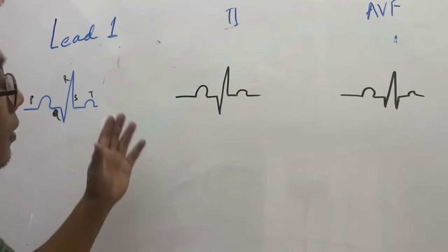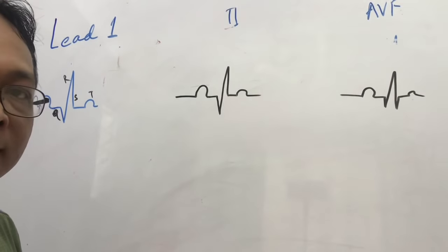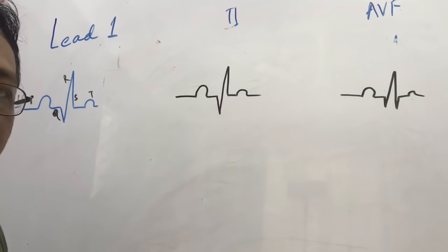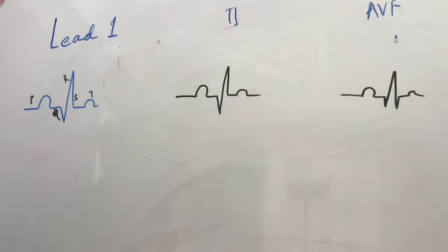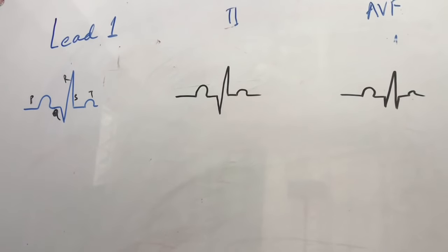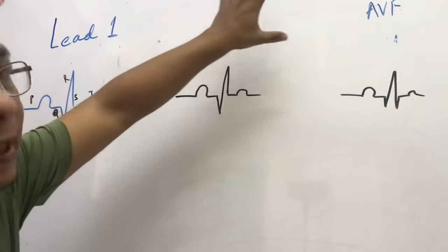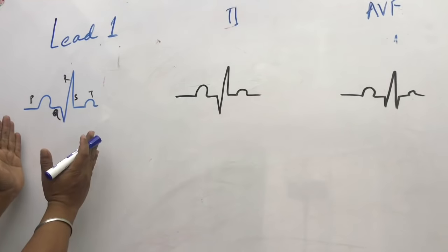How to find axis deviation in ECG — whether it is left axis deviation or right axis deviation. You can diagnose left axis deviation or right axis deviation very quickly, in less than one minute. To find the cardiac axis deviation, you need to focus on lead 1, lead 2, and AVF.